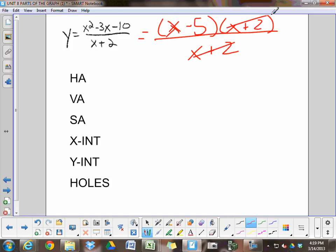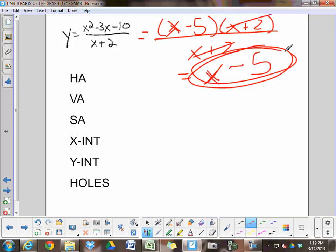The x plus 2s can cancel, leaving me basically with the function x minus 5, y equals x minus 5. This is another key that long division is going to produce no remainder. When you basically get a nice clean cancellation like that and everything's gone except this new function, I don't think we're going to get a slant asymptote, even though this is top heavy.